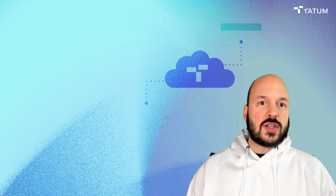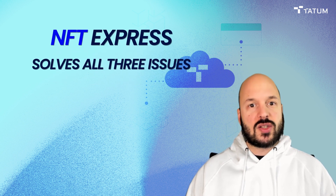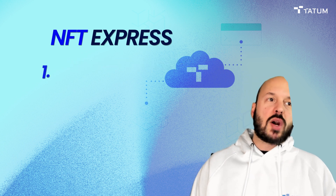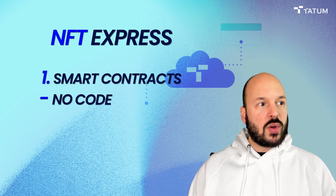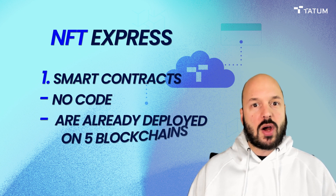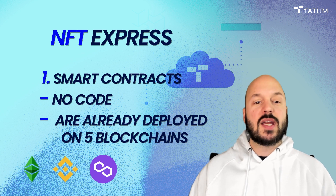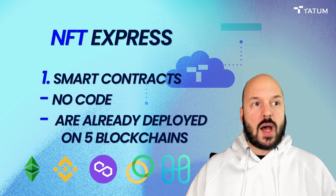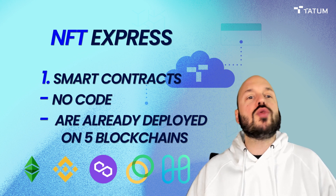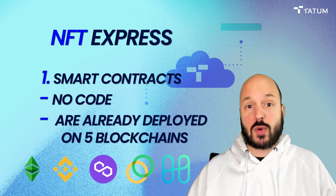So we've created a feature called NFT Express, and this solves these three issues perfectly. First of all, smart contracts — you don't need to deploy or code smart contracts because you can use ours. They're already deployed on five blockchains: Ethereum, Binance Smart Chain, Polygon, Celo, and Harmony. You can mint the NFTs from our pre-deployed smart contracts. The NFTs will be yours. You just don't have to go through all the hassle of creating or deploying your own smart contracts.